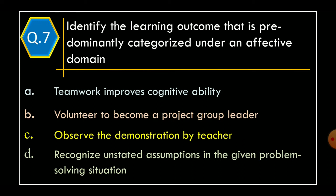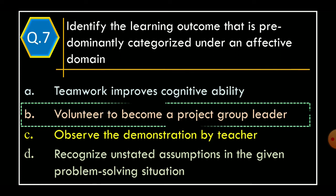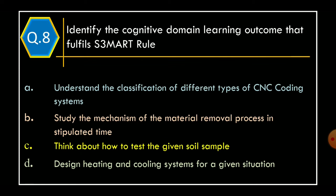Question 7: Identify the Learning Outcome that is predominantly categorized under the Affective Domain. Option A: Teamwork improves cognitive ability; Option B: Volunteer to become a project group leader; Option C: Observe the demonstration by teacher; Option D: Recognize unstated assumptions in the given problem-solving situation. The correct option is Option B: Volunteer to become a project leader.